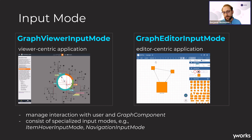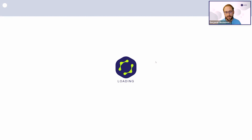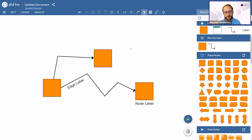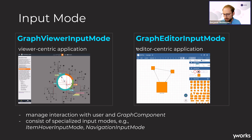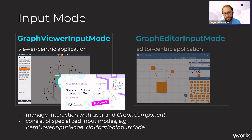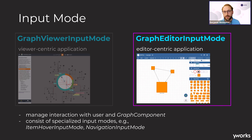Today I would like to focus on the editor-centric application. A typical example is Viat Live, where you can create an entire graph visualization — dropping in nodes, creating edges, and so on. The entire Viat application is also built on yFiles. If you're interested in the viewer input mode, I recommend episode 8; today it will be about the graph editor input mode.